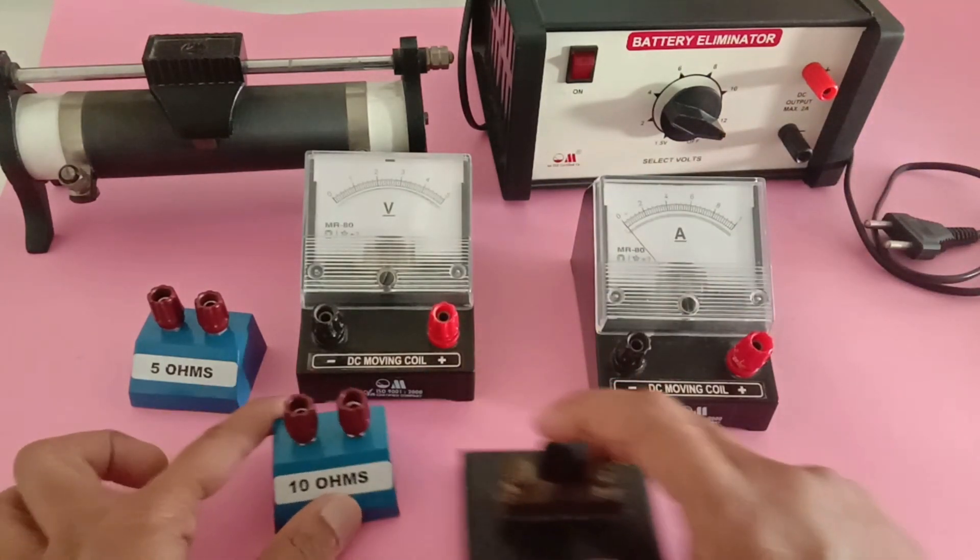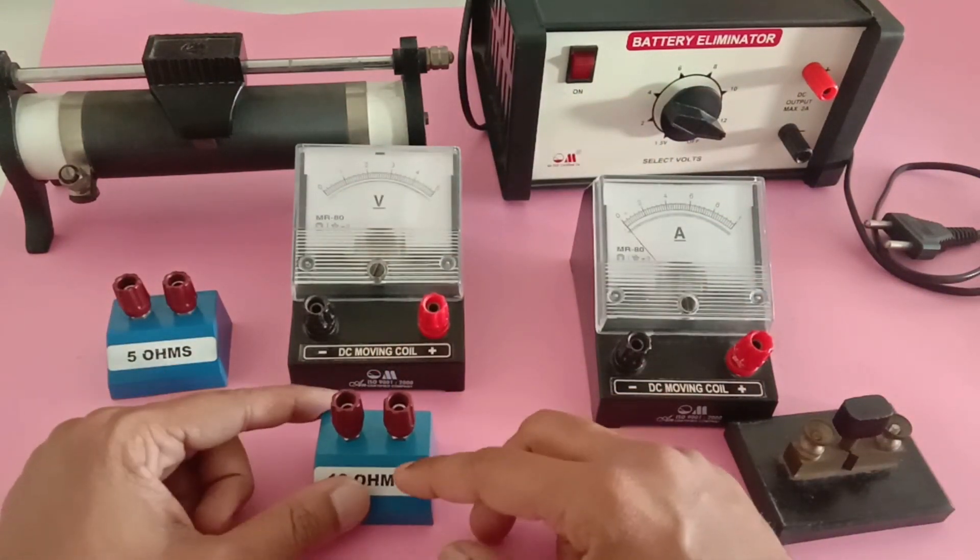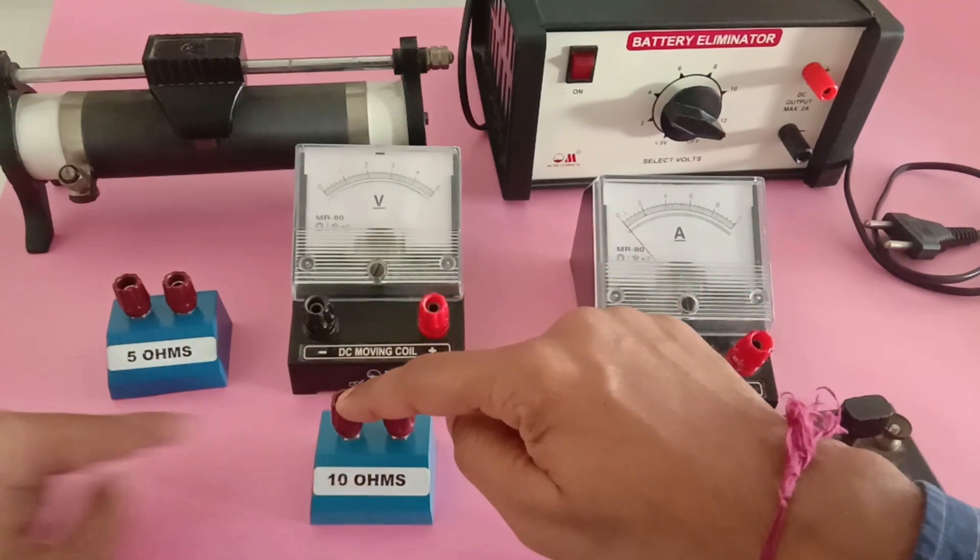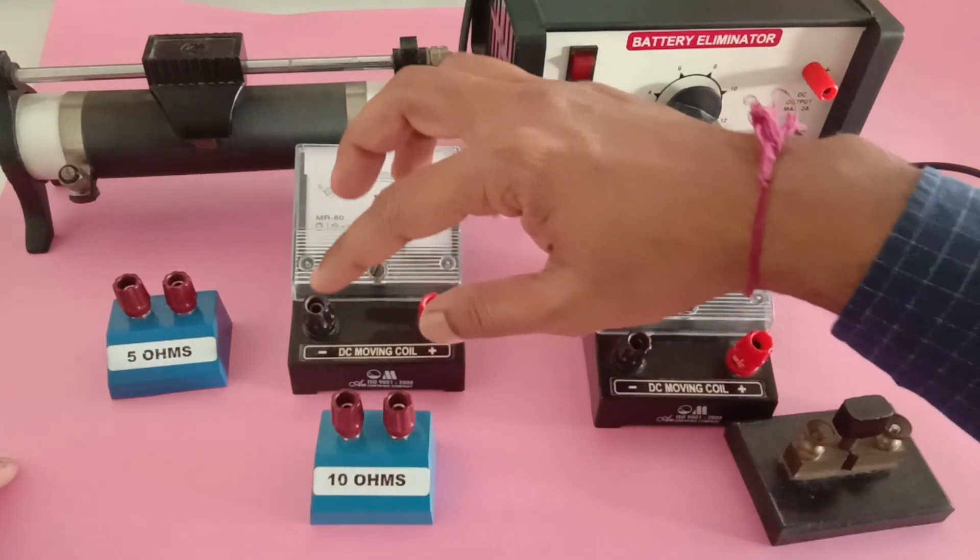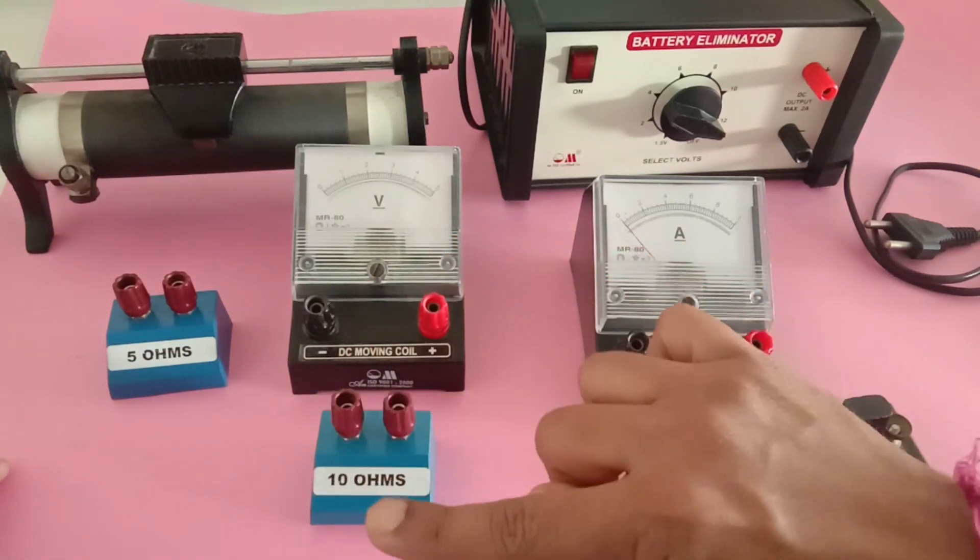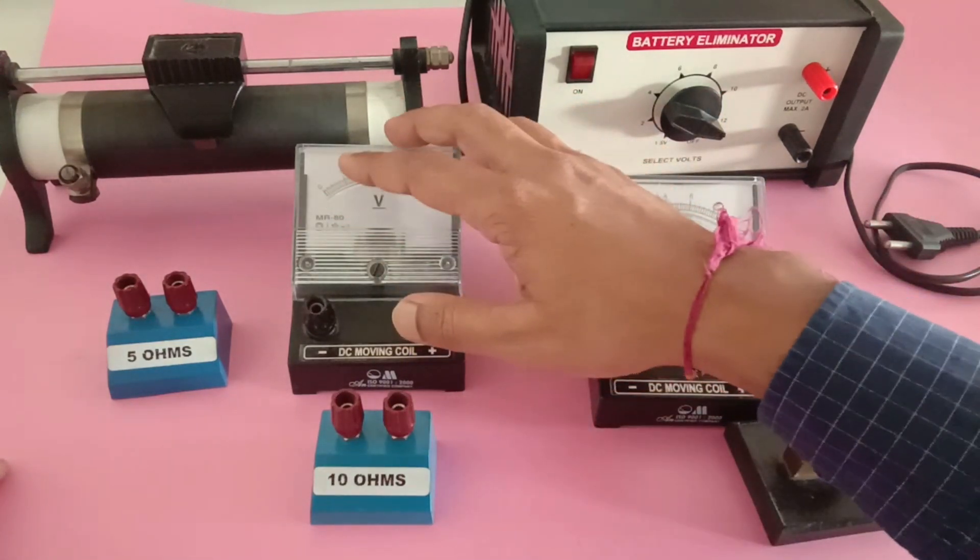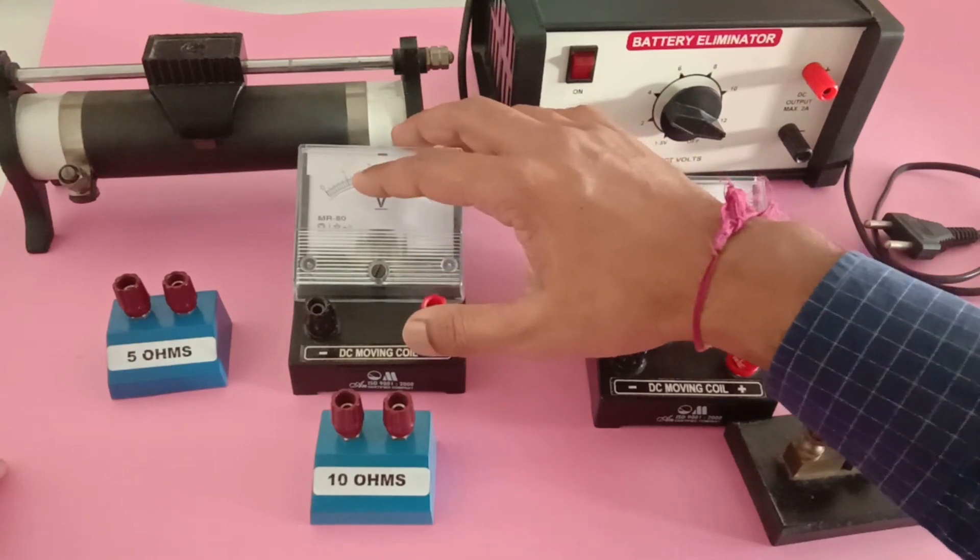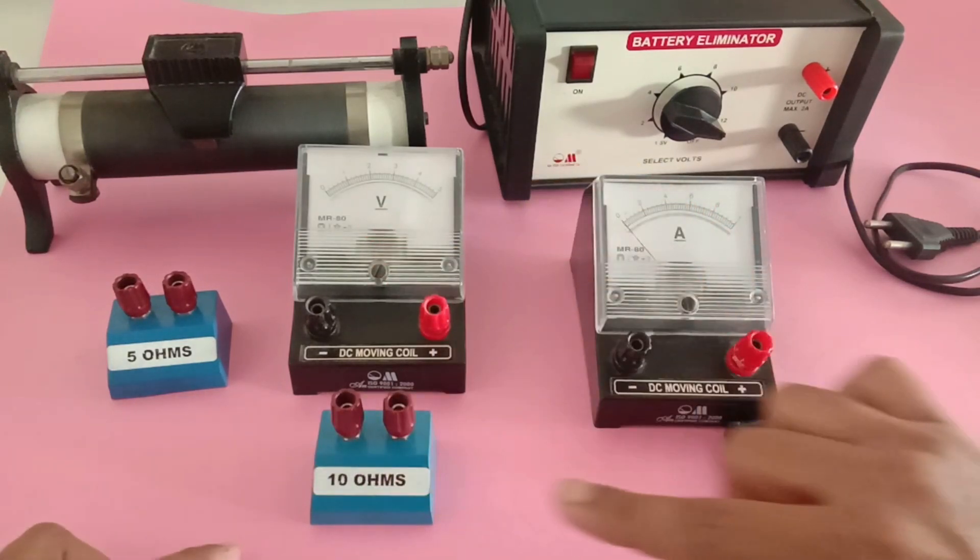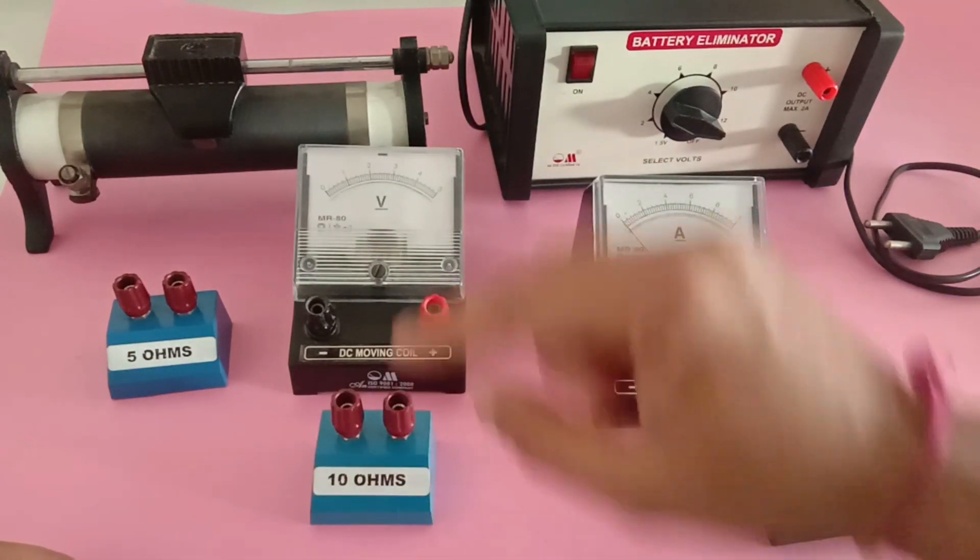We always connect the voltmeter in parallel with the resistance. Since the voltmeter has very high resistance, most current passes through the resistor. The voltage displayed equals current times resistance, or V equals IR. If the voltmeter had low resistance, current would pass through it instead of the resistance, giving incorrect readings.